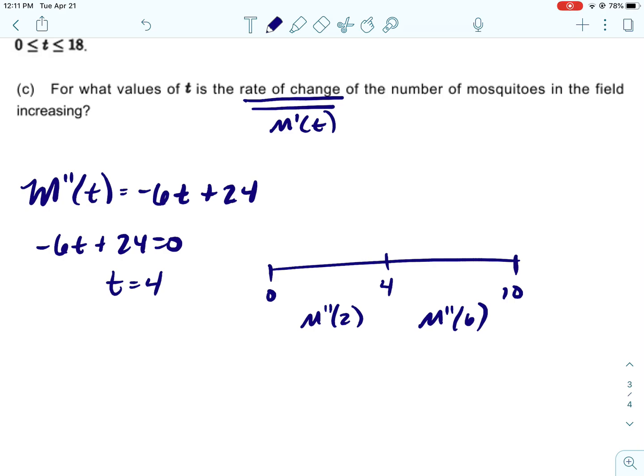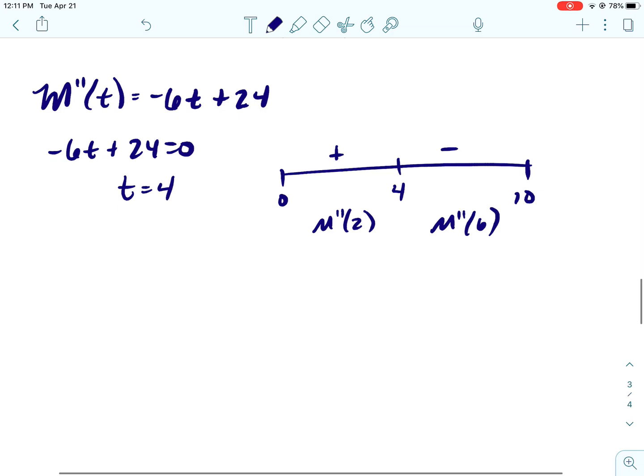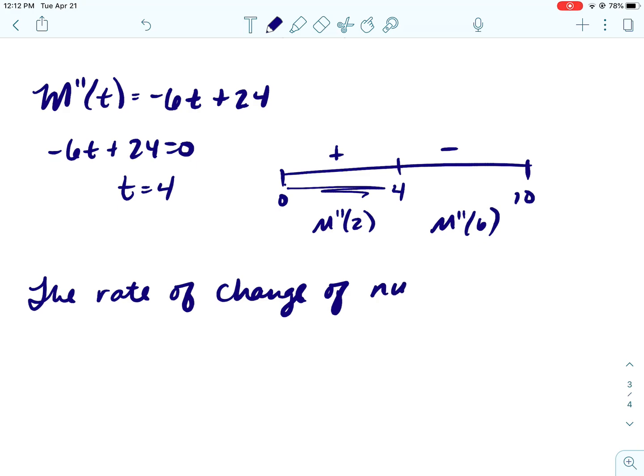All right, now we're just going from 0 to 10. And then we can pick any number in those intervals and plug them into the second derivative. I just randomly picked those, and all we need to know is if we get positive or negative. All right, so because in the interval between 0 and 4 we have a positive, that is where the rate of change is increasing.